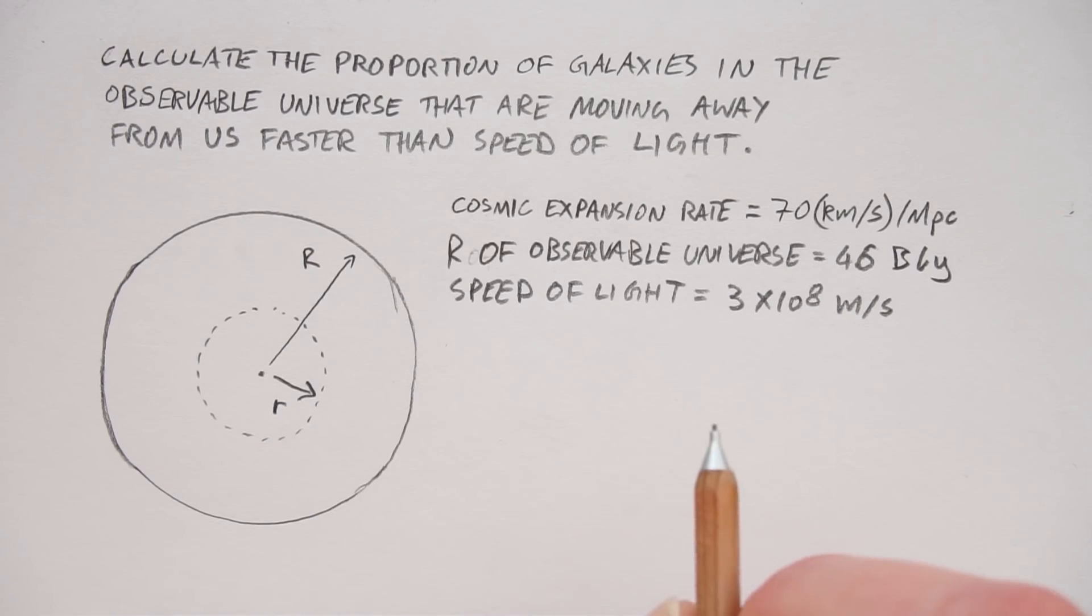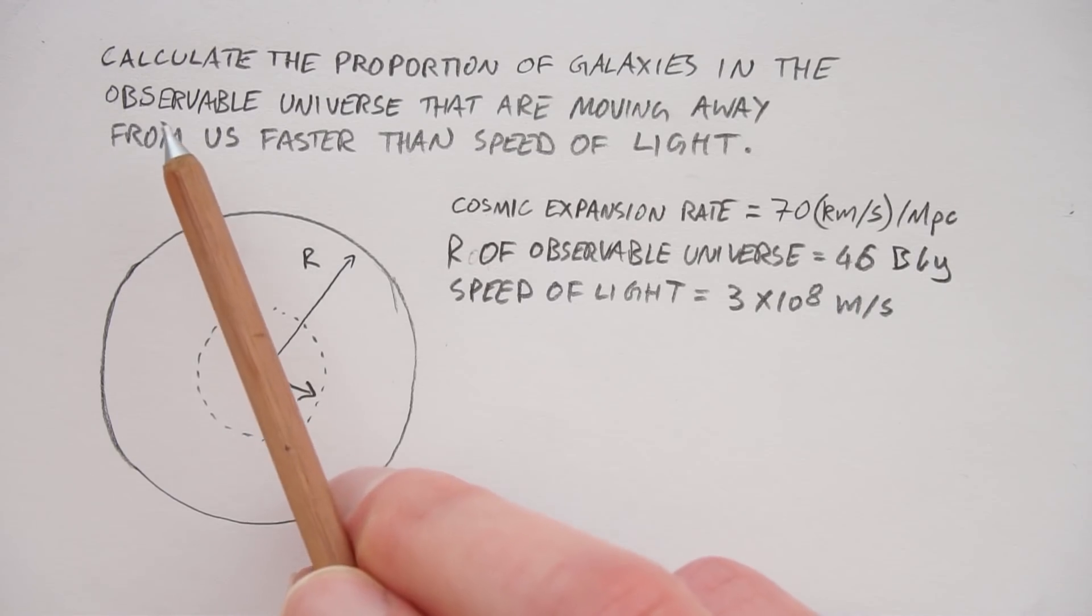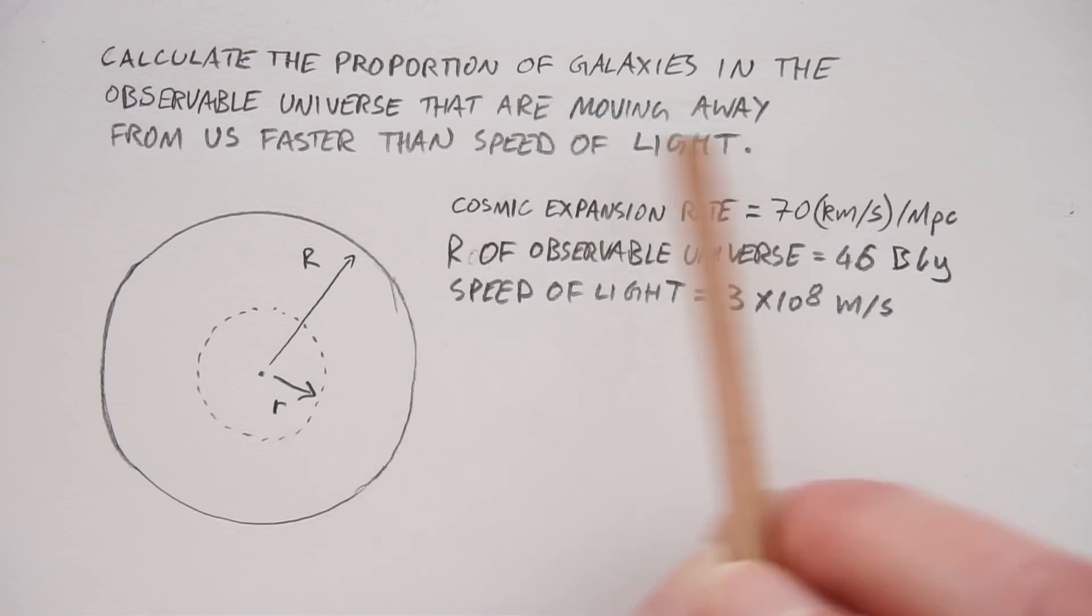Ok, this is the solution to the problem I posed in the last video. If you haven't seen that video yet, click here to go watch it. This question is about calculating the proportion of galaxies in the observable universe that's moving away from us faster than the speed of light.